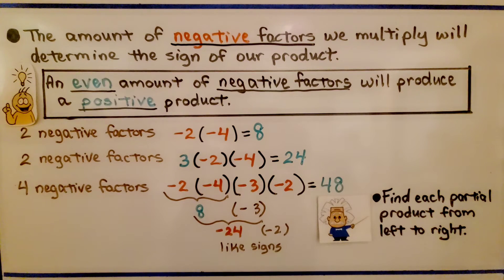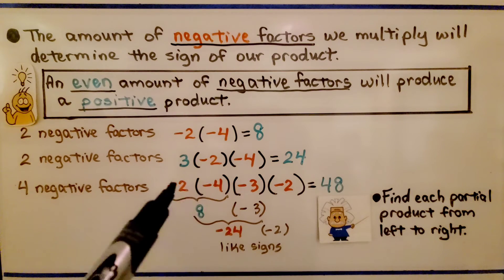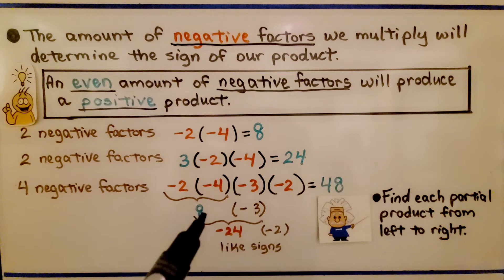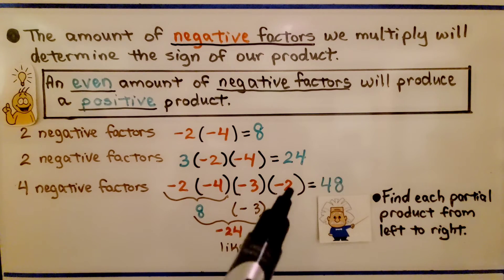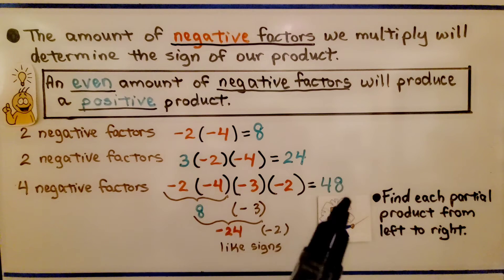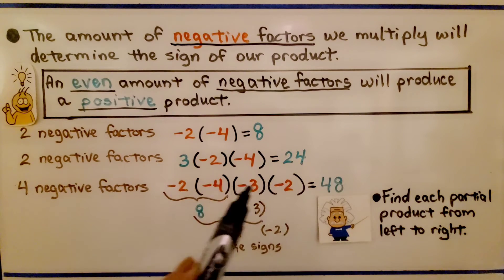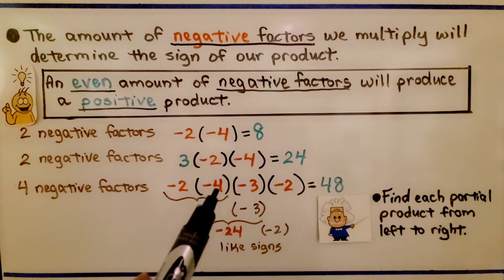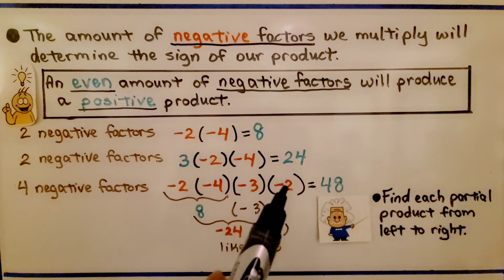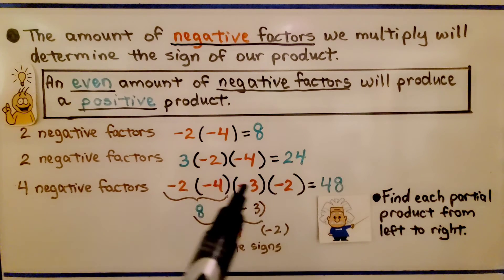We can find each partial product from left to right. Negative 2 times negative 4 — like signs — is positive 8. Positive 8 times negative 3 gives negative 24. Negative 24 times negative 2 — like signs — gives positive 48. We can also just multiply the absolute values: 2×4=8, 8×3=24, 24×2=48. There are four negatives — an even amount — so the answer is positive 48.